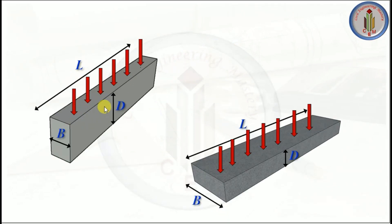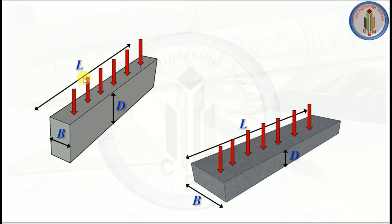When the depth of the beam is more and load is applied in the vertical direction, the beam will have greater stiffness and rigidity to resist the externally applied load.